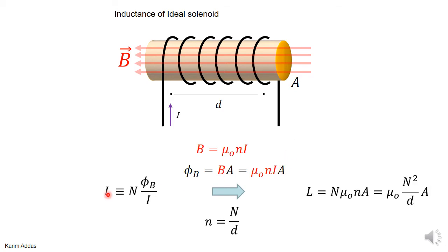If you now substitute to get L, you have the N, and then you have φ over I. When you divide φ by I, you get μ₀NA.